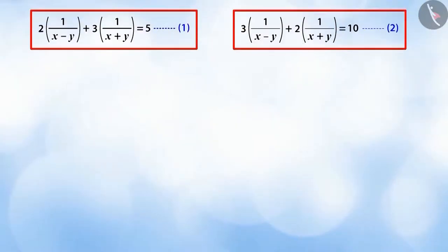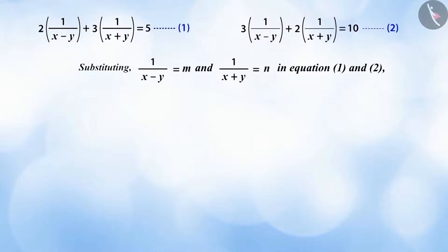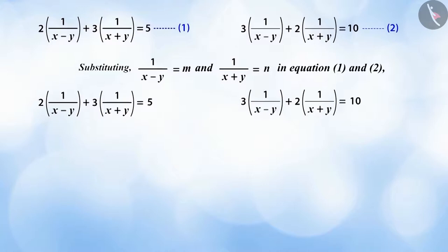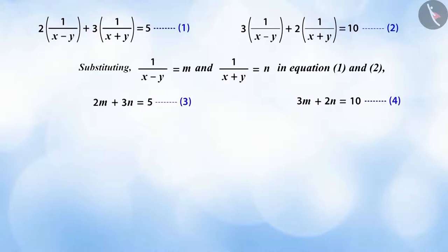That's correct. Just by some important replacements, we can change this pair of equations into a pair of linear equations. If we put 1 by x minus y is equal to m and 1 by x plus y is equal to n in equation 1 and 2, so we will get equations 3 and 4, which represents a pair of linear equations in two variables.